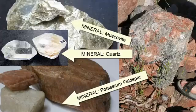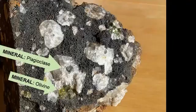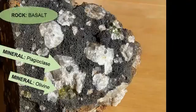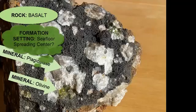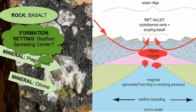Each mineral can form only if the temperature, pressure, and chemical conditions are just right, so finding a particular mineral in a rock can tell us a lot about the temperature, pressure, and chemical environment of its formation. In addition, mineral size and form, and the exact mix and proportion of minerals in a rock, provide further clues and details.